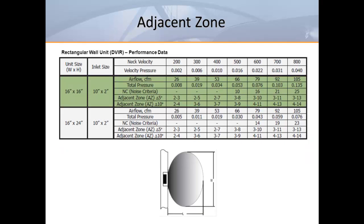In order to position outlets such that we avoid stationary occupants, we need to look at the published performance data. TITUS follows the industry standard by providing the length and width of the adjacent zone for both a 5 degree and a 10 degree delta T. It's important to understand that the spread of the adjacent zone can be contained by partitions and other obstructions, often resulting in longer spread in the opposite direction. On the other hand, the air pattern will simply pass around an object like a column, much like water in a stream.